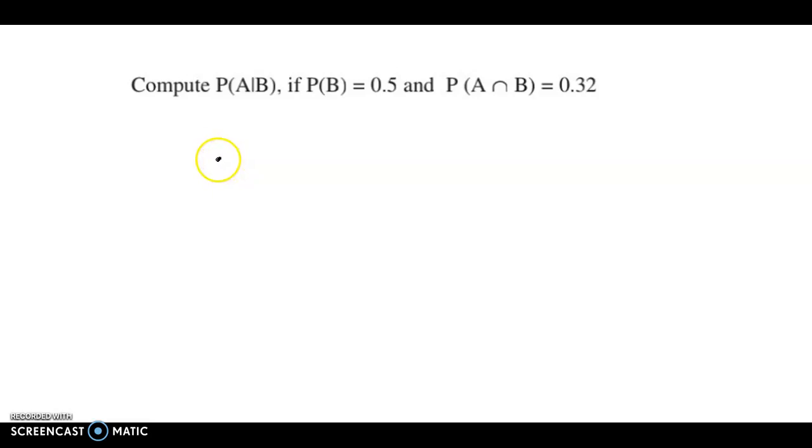Now we know that probability of A given B is obtained as probability of A intersection B upon probability of B. And both values are available here, so we just make the substitutions.